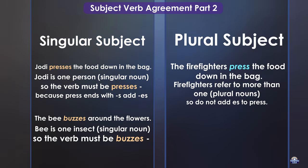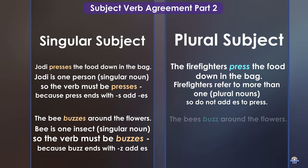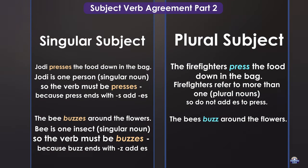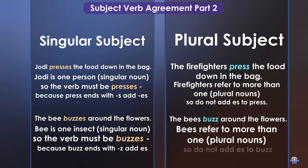A bee is one insect, a singular noun, so the verb must be buzzes. Because buzz ends with Z, we add ES. The bees buzz around the flowers. Bees refer to more than one — plural nouns — so do not add ES to buzz.